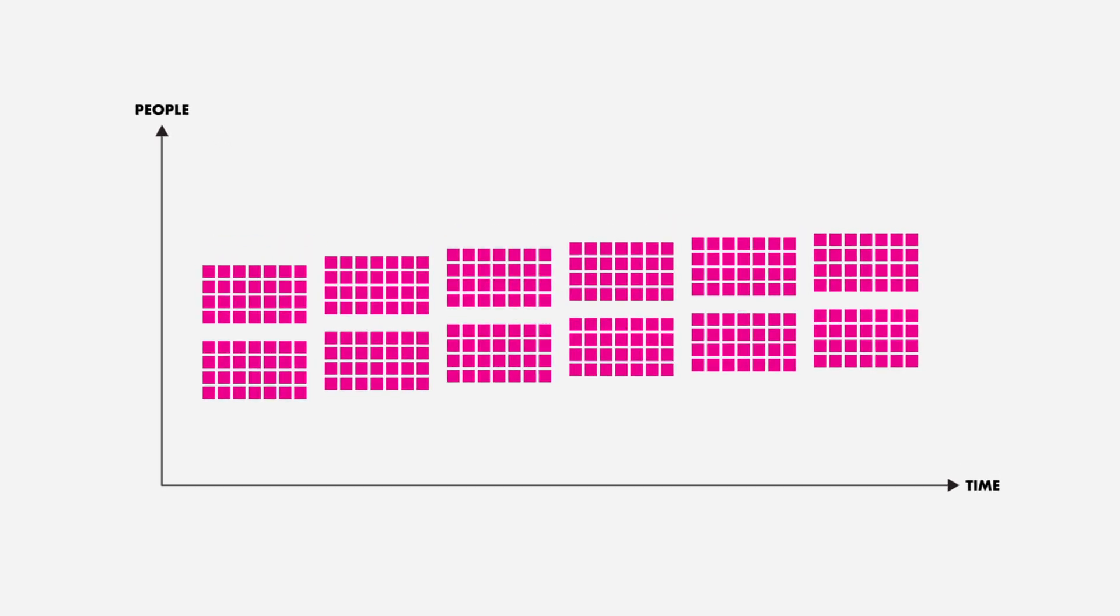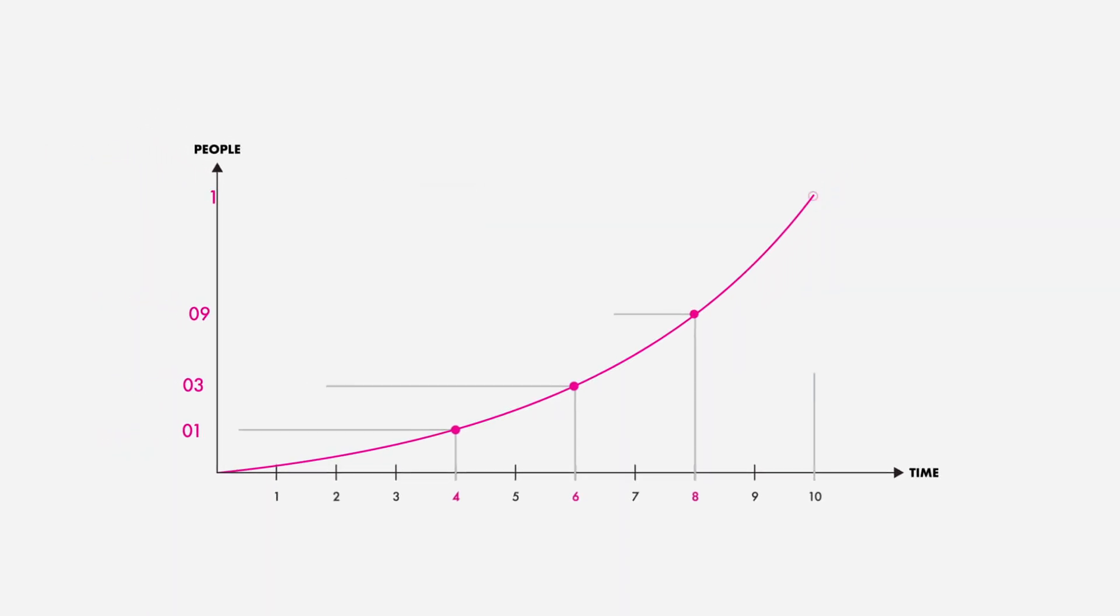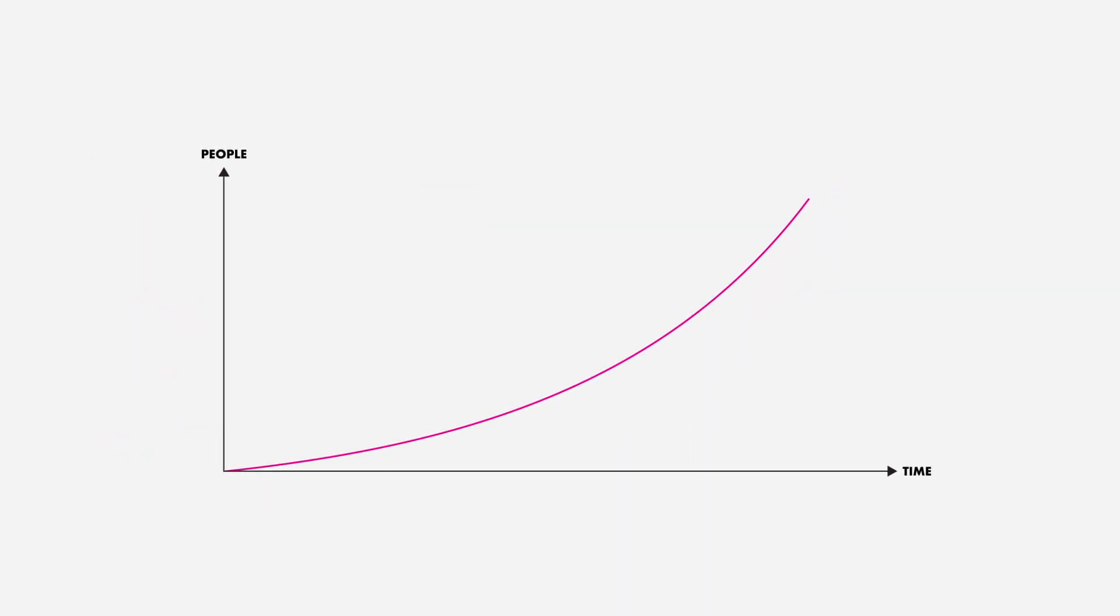For example, if we have 10 days at the bottom and know that one person was infected on day 4, we will have a curve like this. And if we know that 3 people were infected on day 6, 9 people on day 8 and 18 people on day 10, we will have a curve like this. Got it?